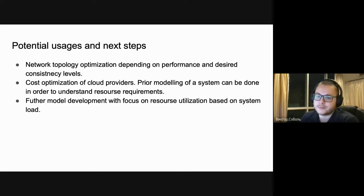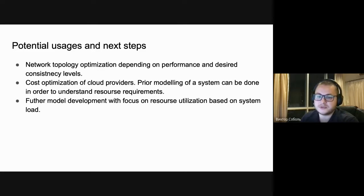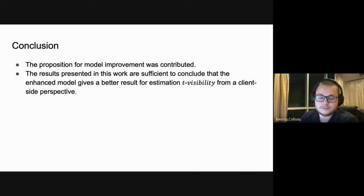Potential usages and next steps: since the model relies on network latency distribution, the consistency impact of all latency optimizations can be conveniently analyzed as a proposed enhancement before implementing. Cloud provider cost optimization is a broad topic, but since the main parts of the data store are included in the model — such as networks and disks — network disks and instance types can be chosen with respect to desired consistency levels. The model has room for development, as load of the data store was not analyzed; resource utilization and units could be included in future studies. The presented enhancement model is sufficient to conclude that from the client-side perspective, the proposed model has clear advantages.